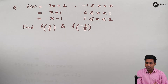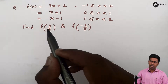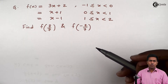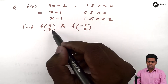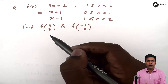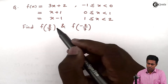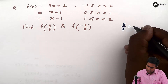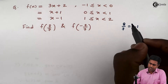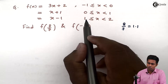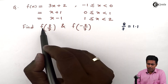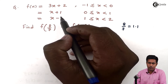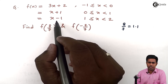To find out the value of the function at point 8 upon 7 and point minus 2 upon 7 — first, to find the value at 8 upon 7, we need to decide where this point lies. So 8 upon 7 is nothing but 1.1, and 1.1 lies in the range 1 to 2. So to find f of 8 upon 7, we are going to use the third function f of x.